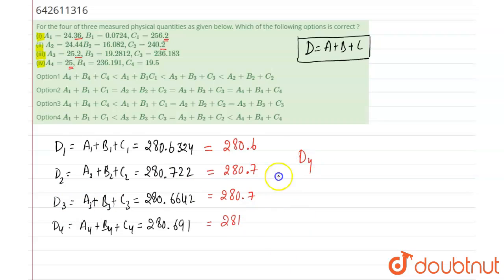So out of four relations we can say that D4 is the largest value, and D3 and D2 are equal, and D1 is the smallest. So according to that, option four is correct. Four is the largest value, one is the smallest value, and three and two are equal, so correct option is four.